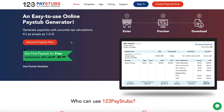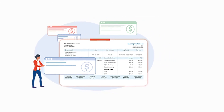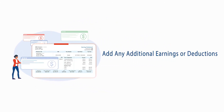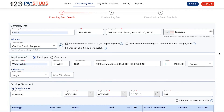Welcome to 123 Pay Stubs. Additional earnings such as bonuses and overtime hours, and deductions such as tax deductions or any other type of deductions, can be added to the pay stub only upon opting for the add additional earnings and deductions add-on. Here's how you can add additional earnings to your pay stubs.